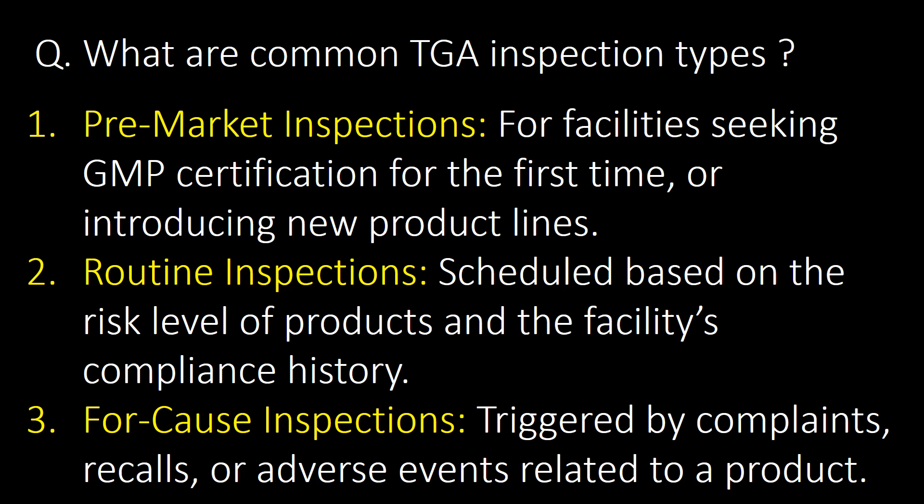What are the common TGA inspection types? The first type is pre-market inspection for facilities seeking GMP certification for the first time or introducing new product lines. The second type is routine inspections, scheduled based on the risk level of products and the facility's compliance history. The third type is for-cause inspections, triggered by complaints, recalls, or adverse events related to the product.